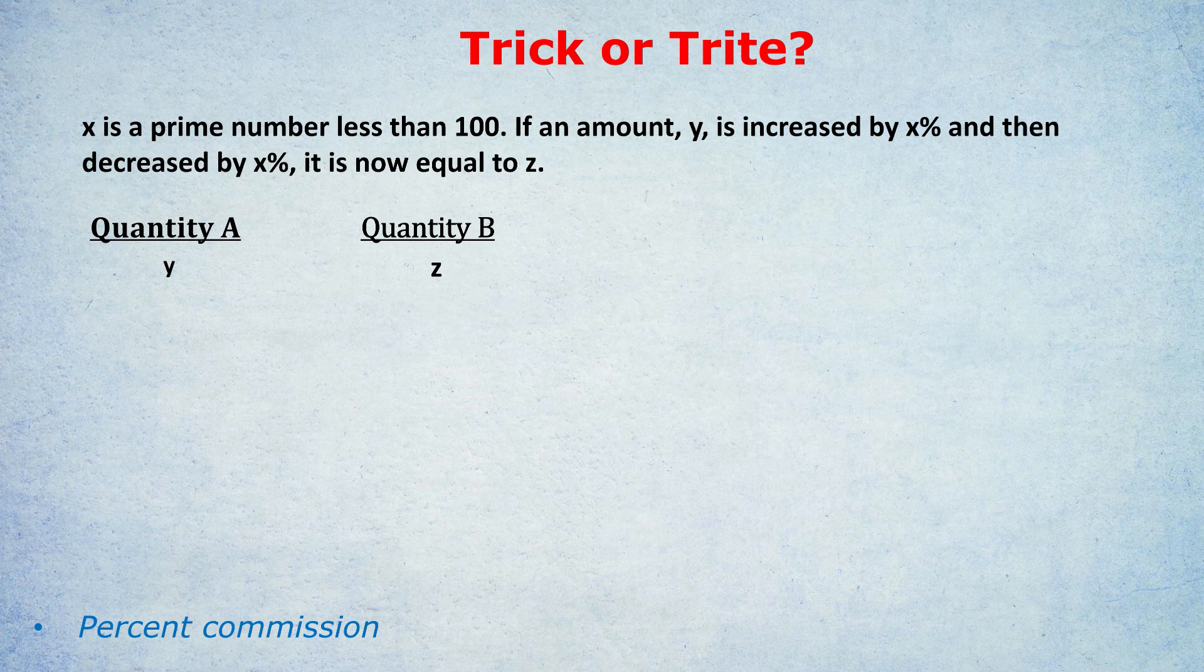In other words, if you increase by a percentage first, and then decrease by that same percentage, you end up with a lower amount than you started with. So y is actually bigger than what it ended up being, which is z.